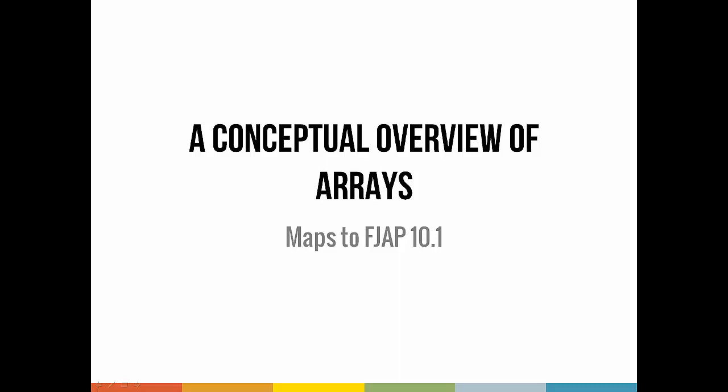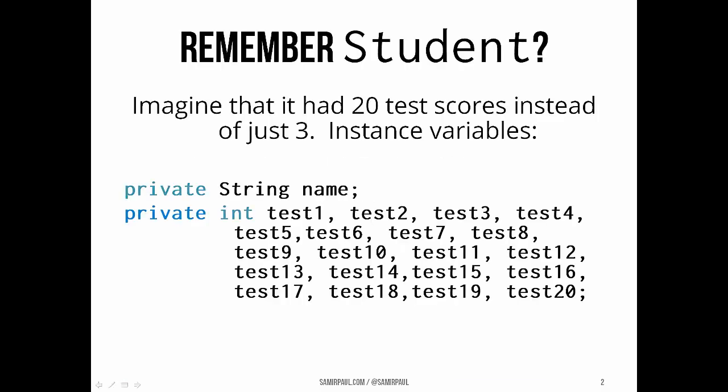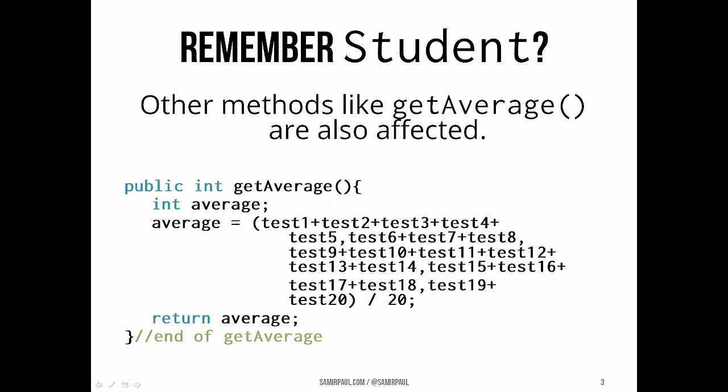Imagine how tedious it would be if instead of three test scores, a student had twenty test scores. We'd end up having to have twenty different instance variables, all of type int, and they all really represent the same kind of thing. Other methods, like getAverage and really everything else that works with those instance variables, would be affected too. It's just a big hassle to work with.